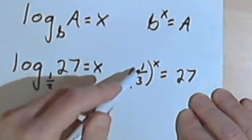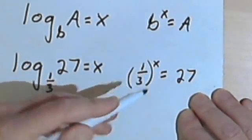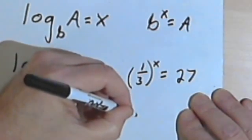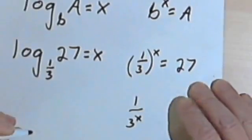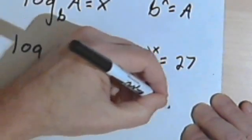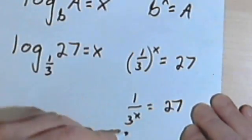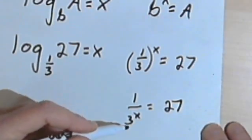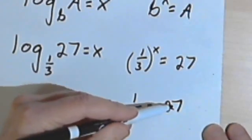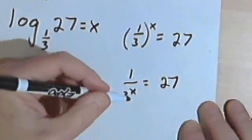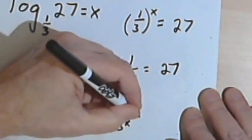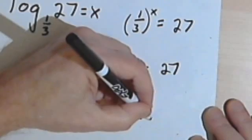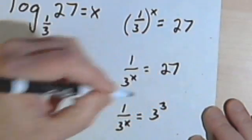So let's raise 1/3 to the x power. Well, 1 to any power is 1. So that means I'm going to have 1 over 3 to the x. And that equals 27. So I want to think in terms of 3s. Well, 27 is 3 to the 3rd. So 1 over 3 to the x equals 3 to the 3rd.